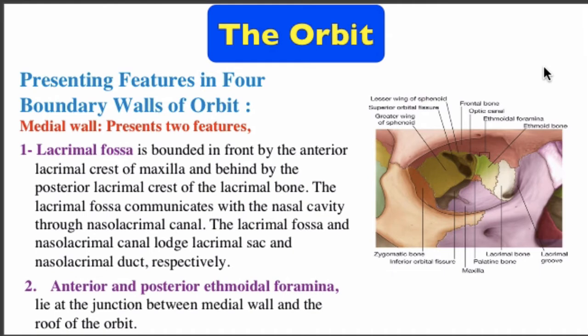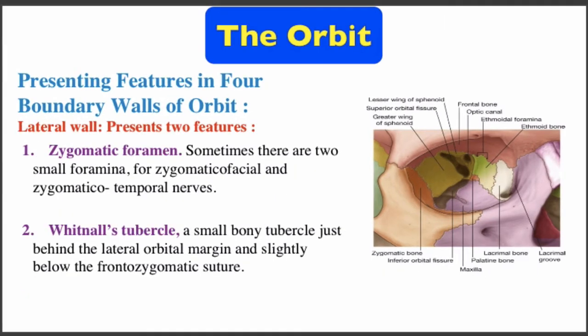The anterior and posterior ethmoidal foramina lie at the junction between the medial wall and the roof of the orbit.